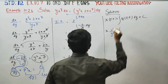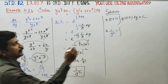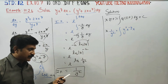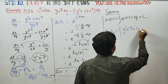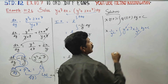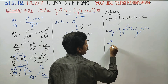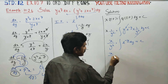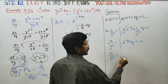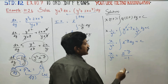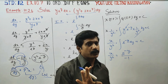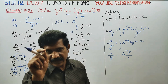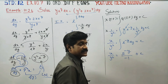Now find Q: Q = y²·e^(-y). Multiply Q by the Integrating Factor 1/y²: x/y² = ∫ y²·e^(-y) · (1/y²) dy + C = ∫ e^(-y) dy + C. Integrating e^(-y) gives e^(-y)/(−1) = −e^(-y). So x/y² = −e^(-y) + C.